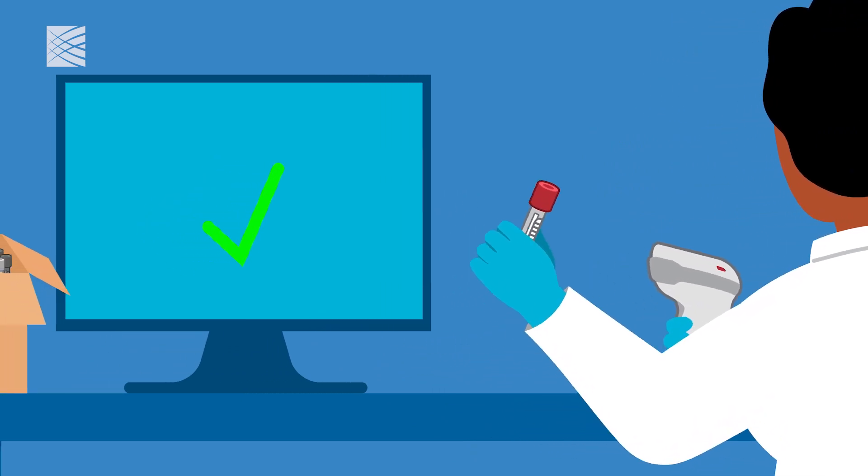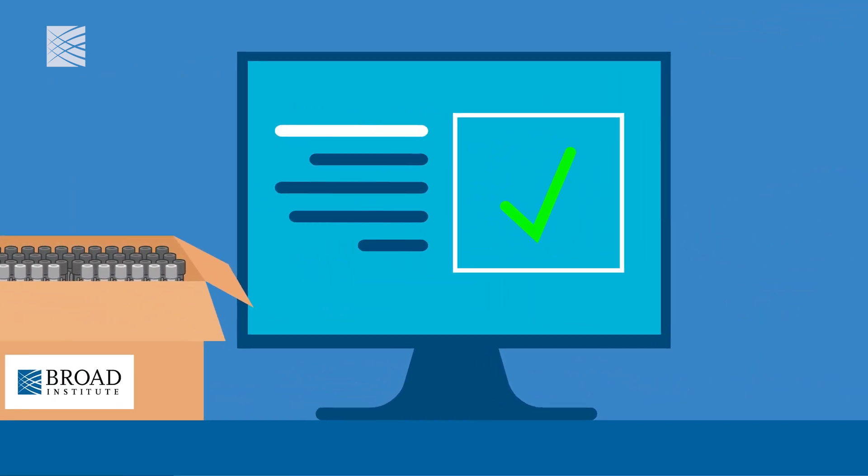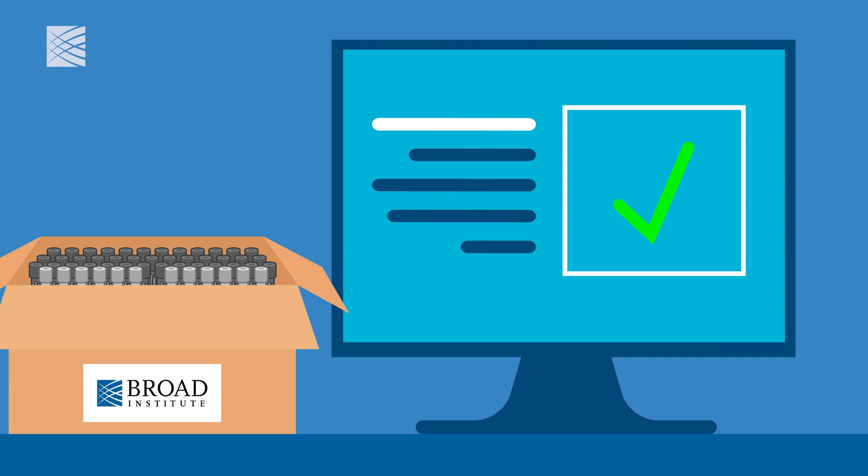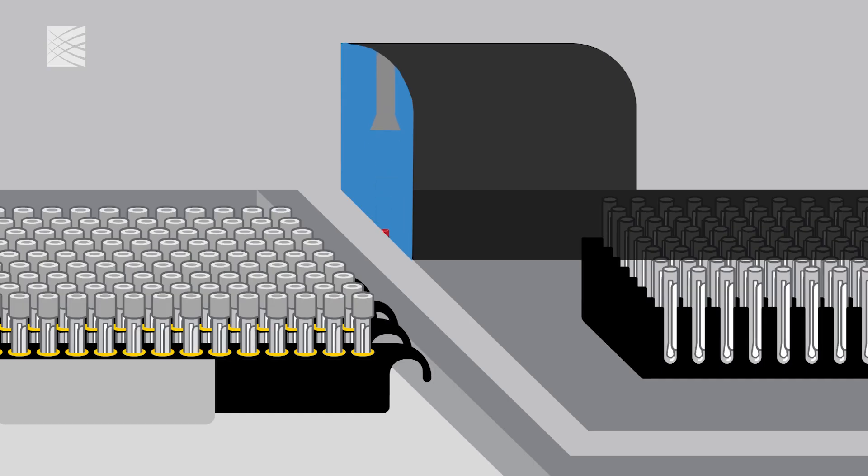The testing sites make sure that the samples are collected in a consistent way, which speeds up the processing. The samples first go through a machine that can uncap 1,200 tubes every hour.